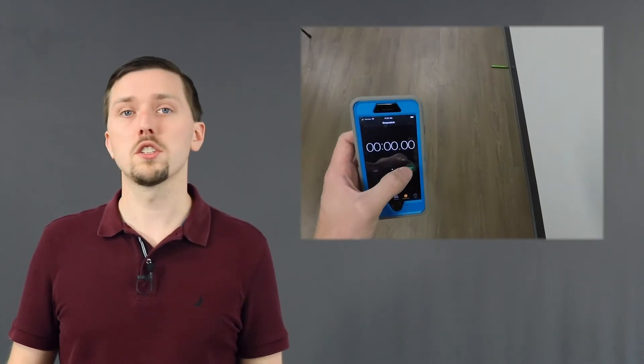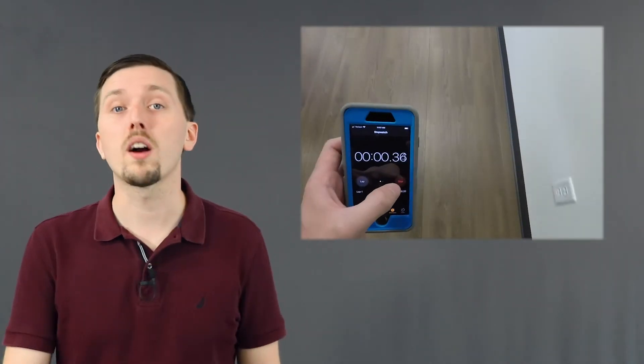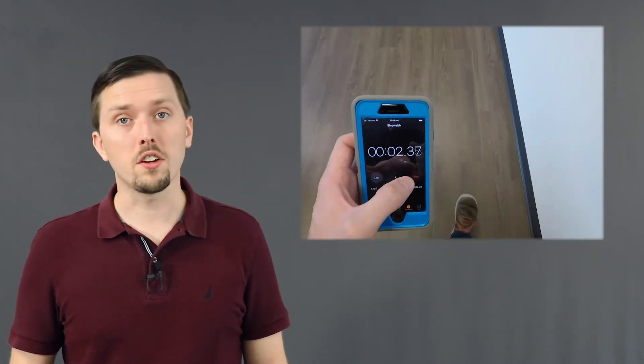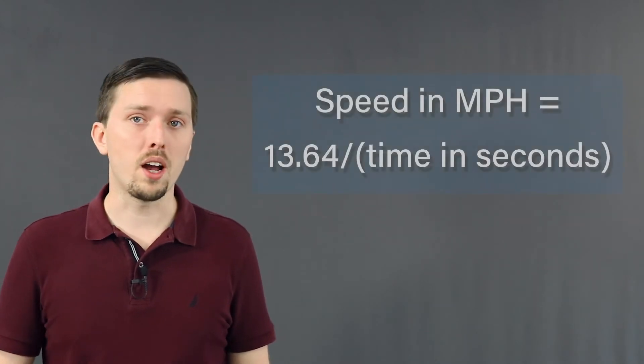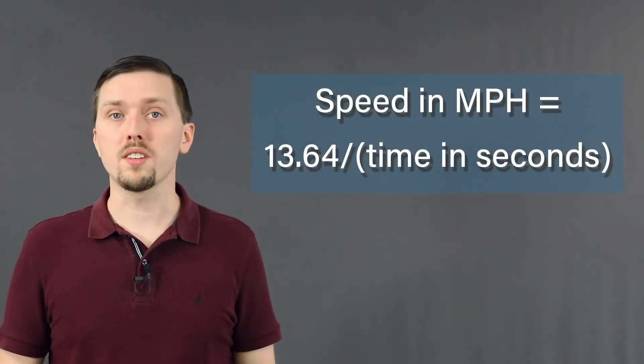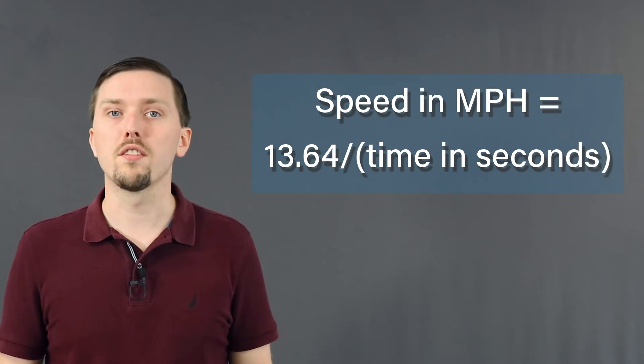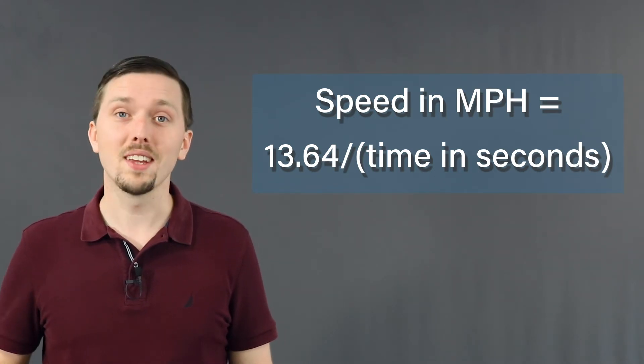Measure a 20-foot distance on the ground and place two objects on the ground to mark each end. Pens can work for this purpose. Then walk comfortably between the two marks, starting a little behind the first pin and walking past the second one. You start the timer when you cross the first pin and stop it when you cross the second. To calculate your speed in miles per hour, divide 13.64 by the time it took you to cover the 20-foot distance. This is your walking speed.